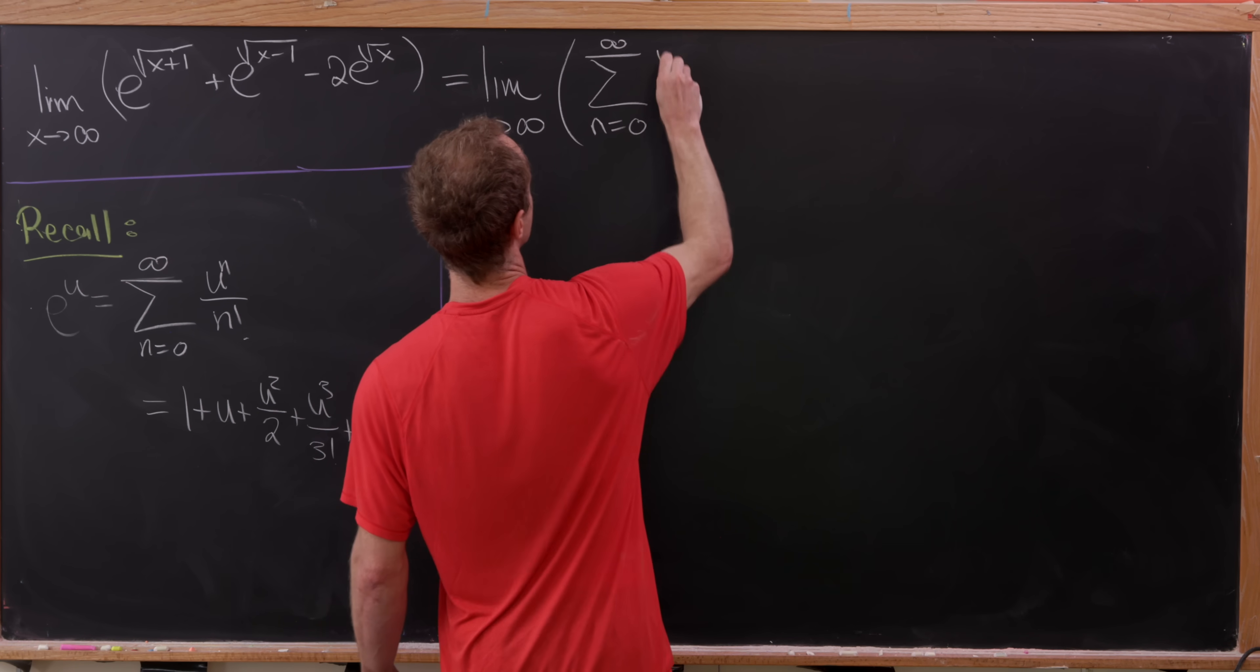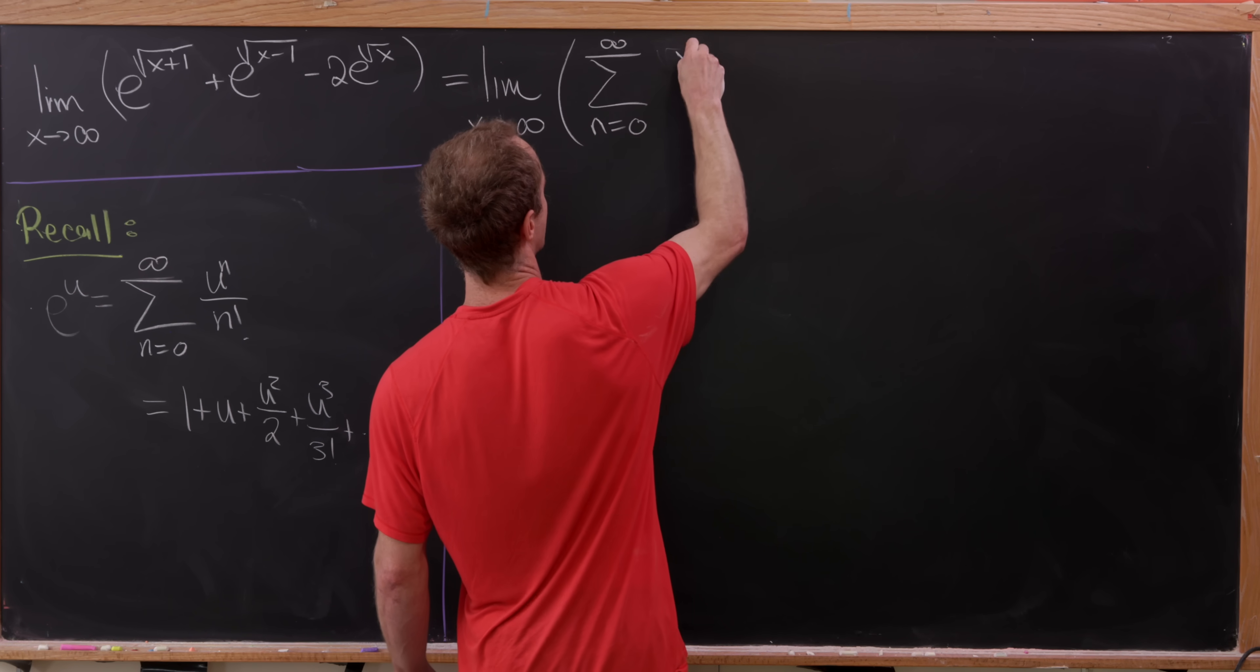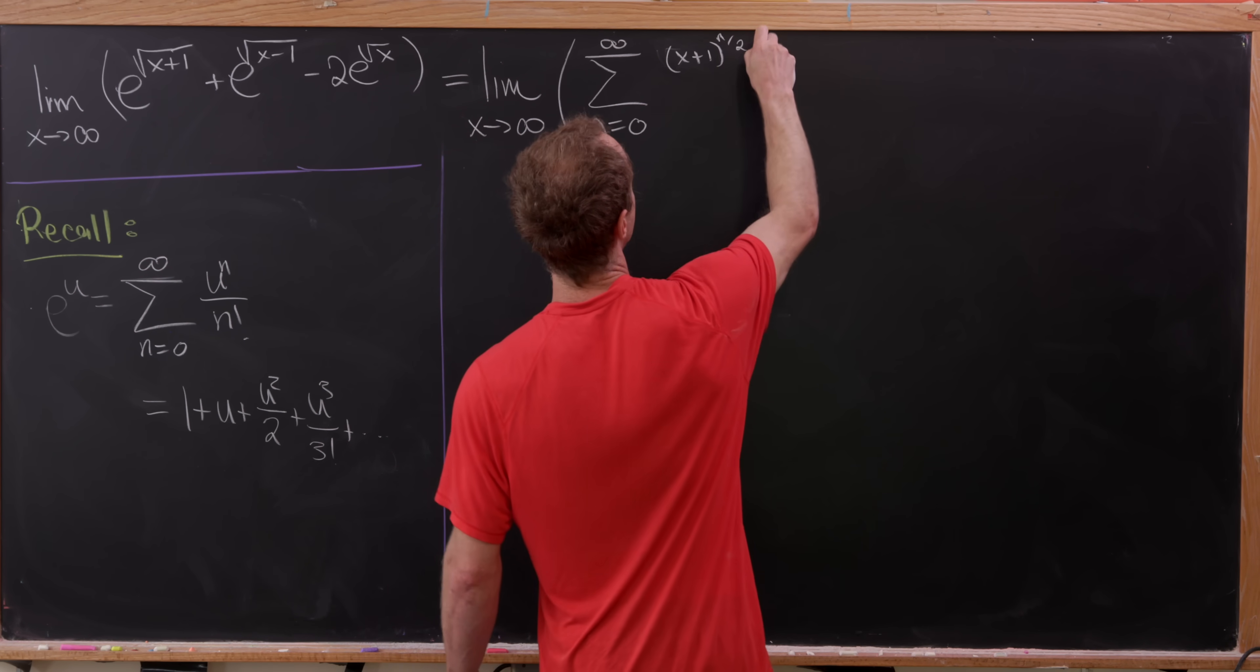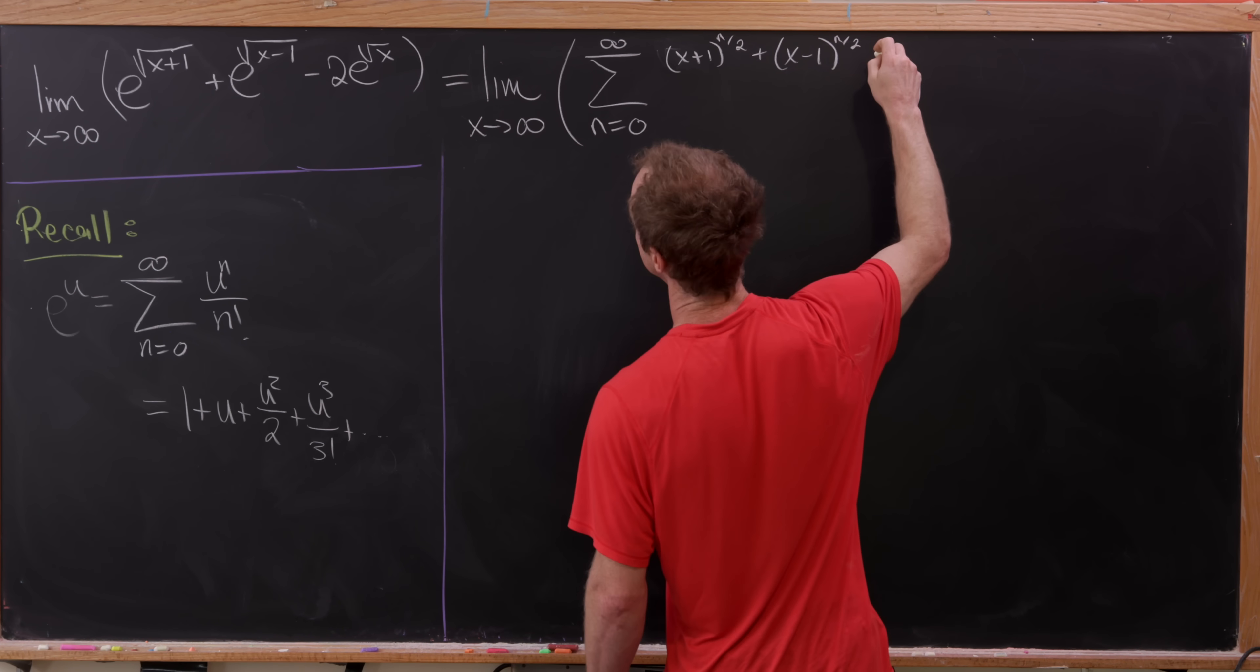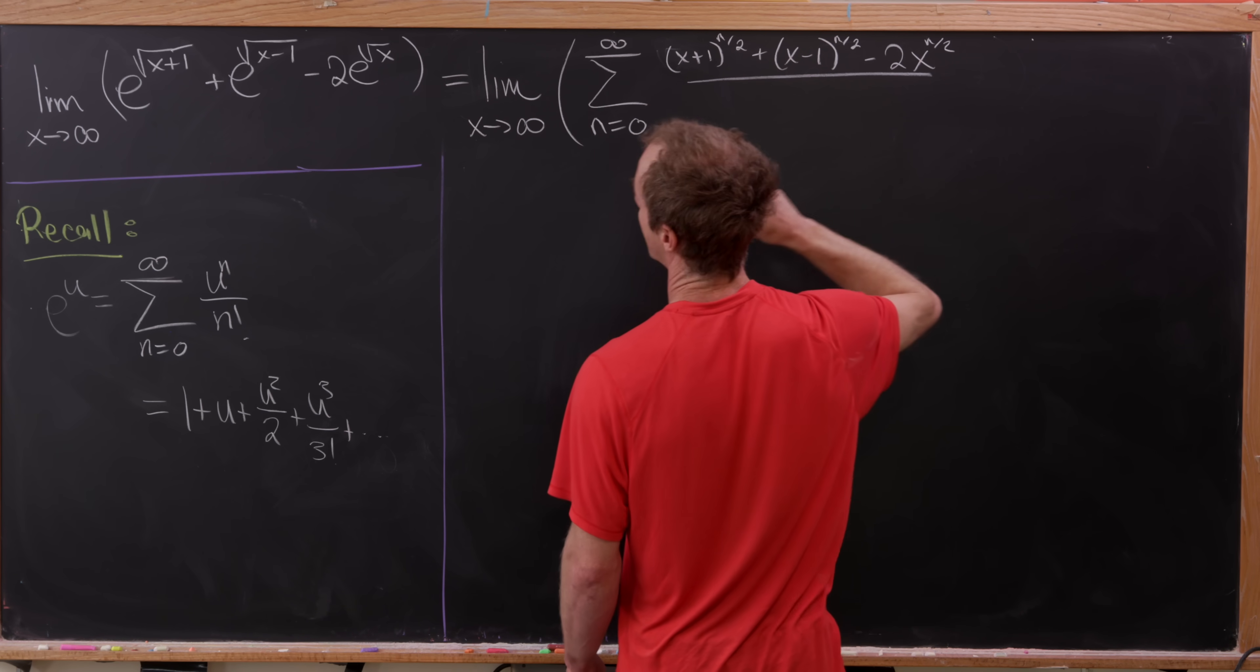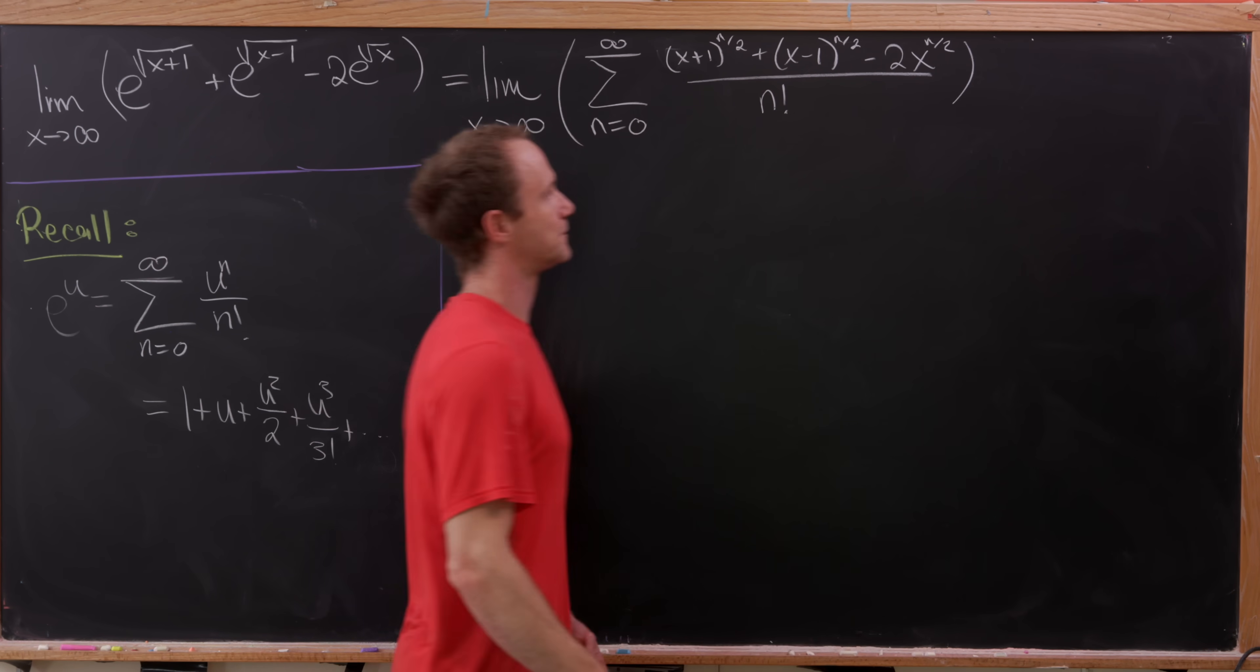So we'll have the square root of x plus 1 to the n. In other words, we'll have x plus 1 to the n over 2 plus x minus 1 to the n over 2 and then minus 2 times x to the n over 2 and then all of this is over n factorial.